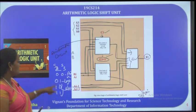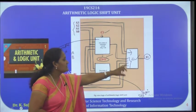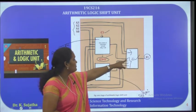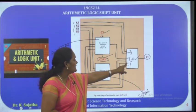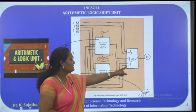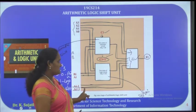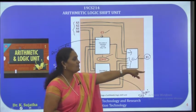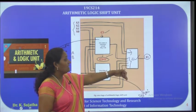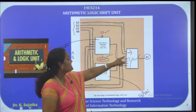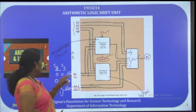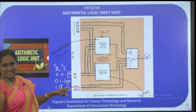The 4-by-1 multiplexer has inputs 0, 1, 2, 3 connected to the arithmetic circuit output, logic circuit output, Ai-1, and Ai+1 respectively. Whichever input is active becomes the output of the multiplexer, determined by selection inputs S2 and S3. When S2, S3 are 0, 0 — arithmetic input (0) is active; when 0, 1 — logic input (1) is active.